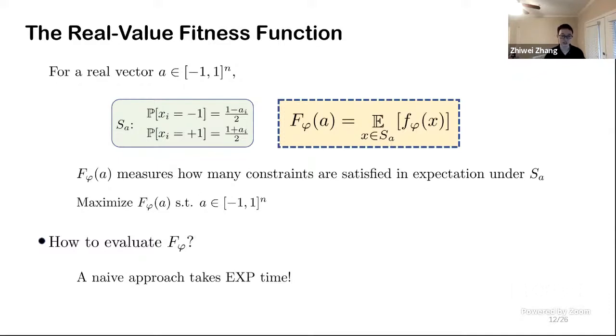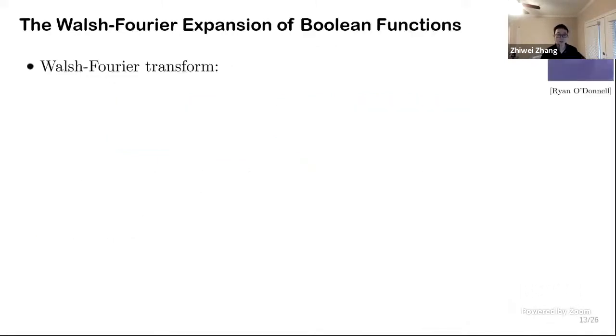The next question to ask is how to evaluate this fitness function. A naive approach takes exponential time, of course. But it turns out that this fitness function can be evaluated in polynomial time by the so-called Walsh-Fourier expansions, which I will describe in the next slide.